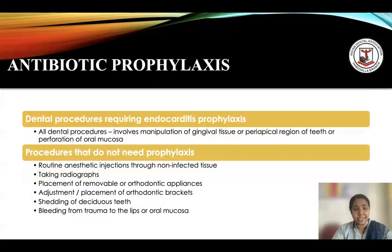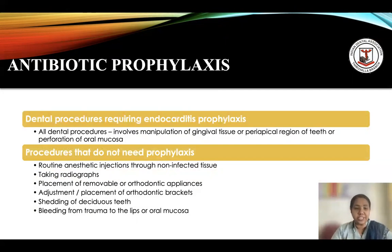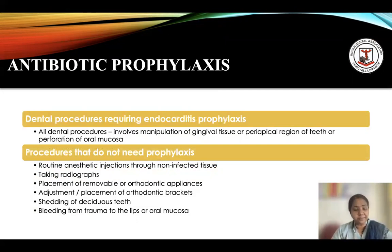What are the dental procedures which require prophylaxis? It is only when there is going to be manipulation of the gingival tissue or the periapical region of teeth, or when you are going to perforate the oral mucosa. When taking a radiograph, placing or removing orthodontic appliances, adjusting brackets, removing a mobile deciduous tooth, or when there is minor trauma to the lips or oral mucosa, you do not require antibiotic prophylaxis.